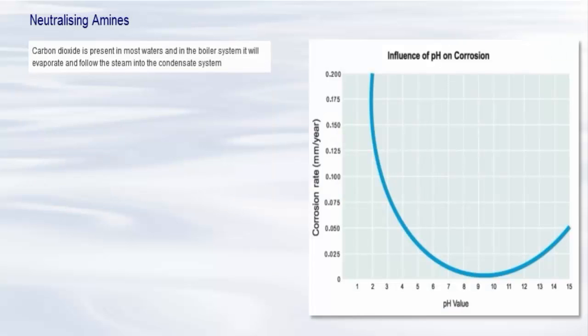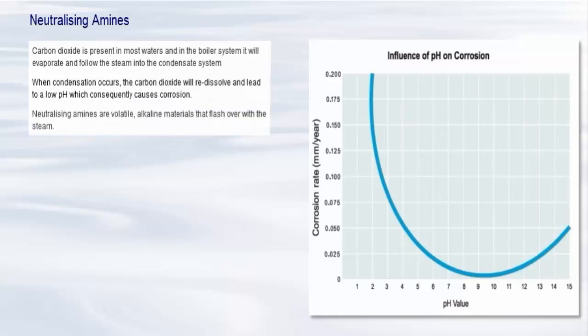Carbon dioxide is present in most waters and in the boiler system it will evaporate and follow the steam into the condensate system. When condensation occurs, the carbon dioxide will redissolve and lead to a low pH which consequently causes corrosion. Neutralizing amines are volatile, alkaline materials that flash over with the steam. They combine with the condensate water to elevate pH and provide corrosion protection.